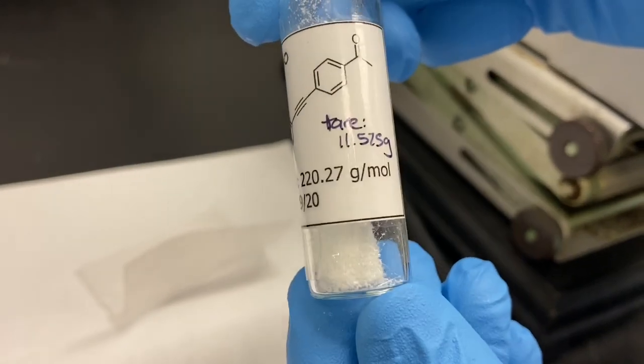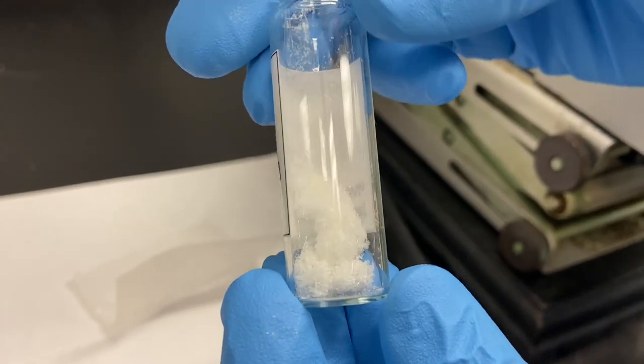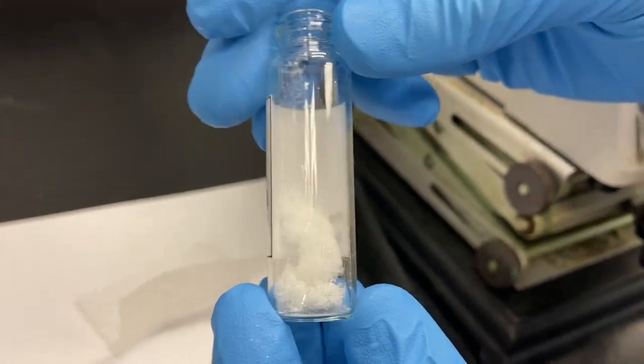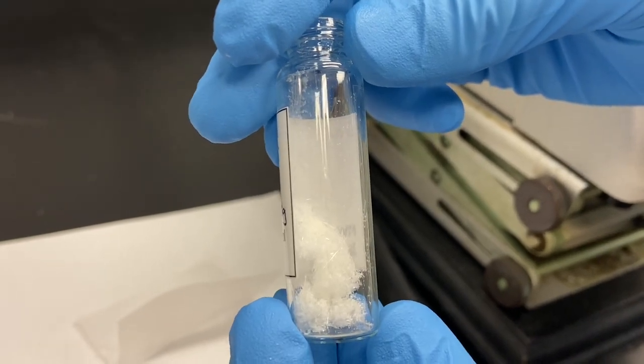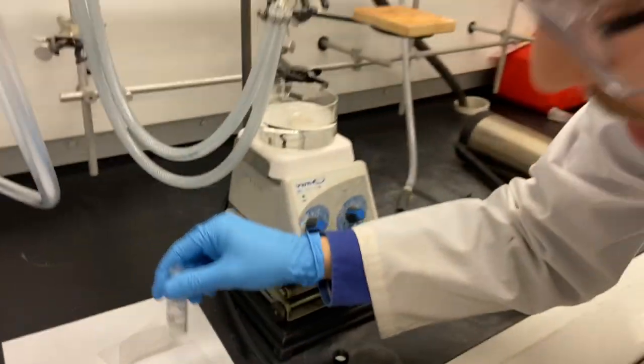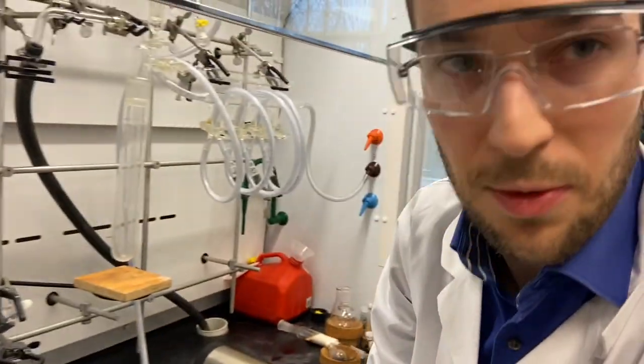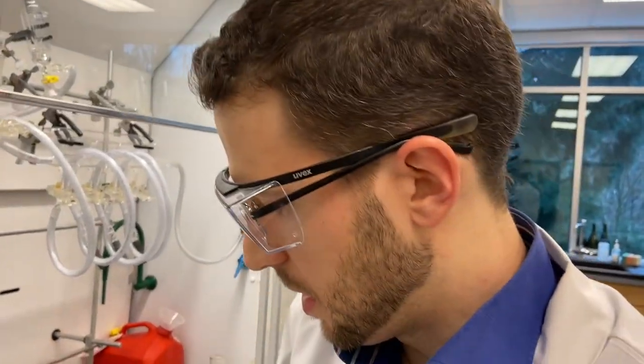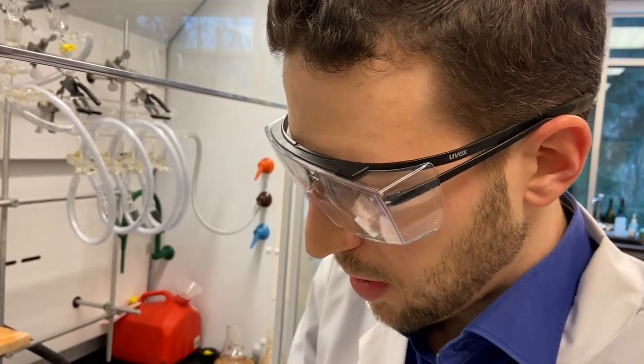It's the freshly sublimed product. We'll do some NMR and check for purity. When you do this, try to note down at what temperature and what pressure you sublime the material, and you can use that for your characterization.